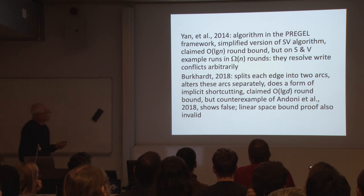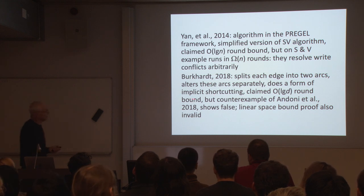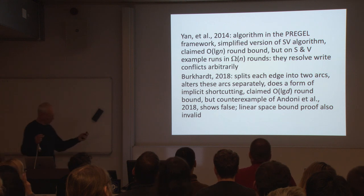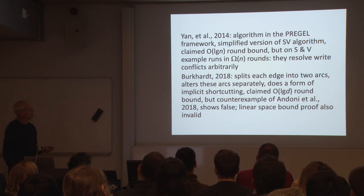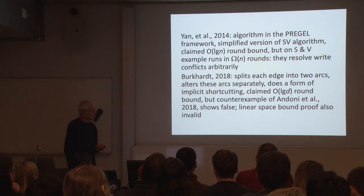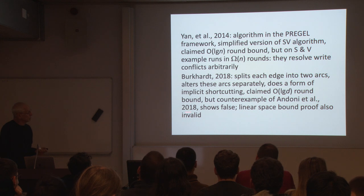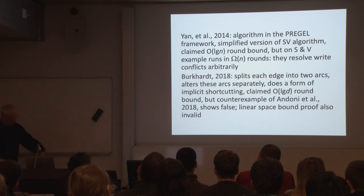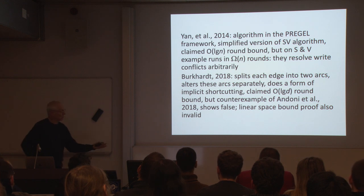Another paper on arXiv proposes an interesting algorithm that splits each edge into two arcs directed in opposite directions, which it then modifies independently. The author claimed an order log D round bound, which would be spectacular if true. Unfortunately, there's a counterexample in a paper by another group — so this bound is false. It's unclear whether this algorithm runs in log n time. The author also claims the number of arcs stays a constant factor times the original, but that proof is wrong as well.